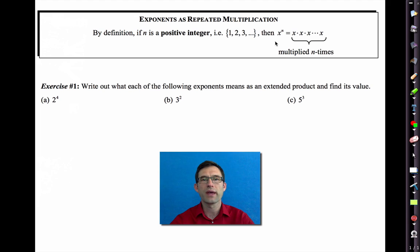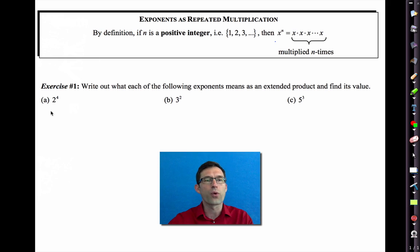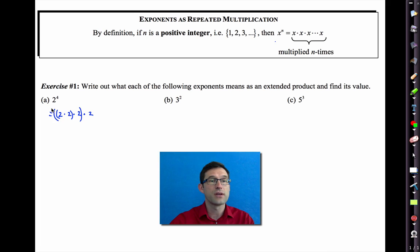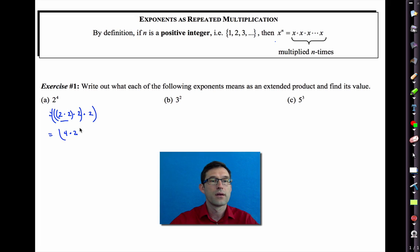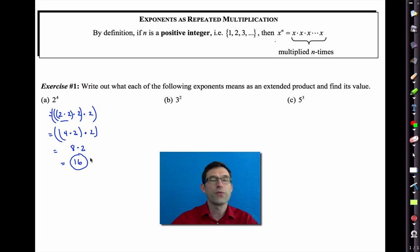Exercise number one says write out what each of the following exponents means as an extended product and find its value. Let's see how many of these we can do without our calculator. So, two to the fourth means two times two times two times two. I'm going to use the associative property of multiplication to look at the problem like this: two times two is four, then four times two is eight, and then eight times two is sixteen. So two to the fourth is 16.